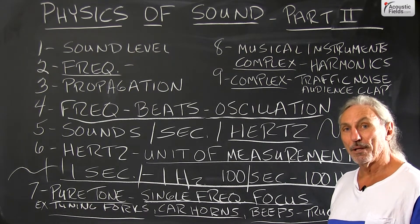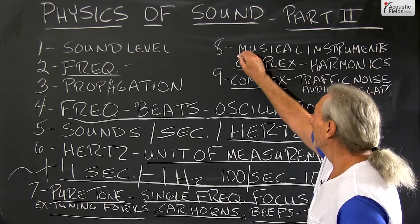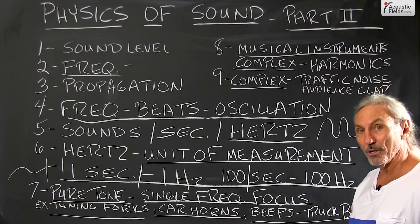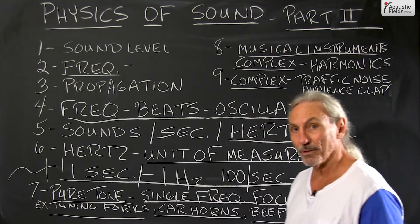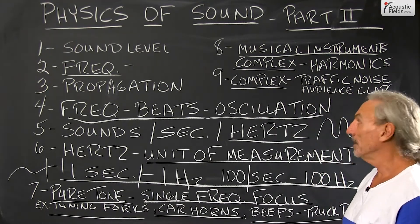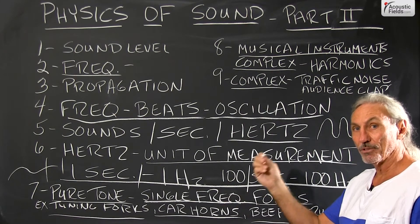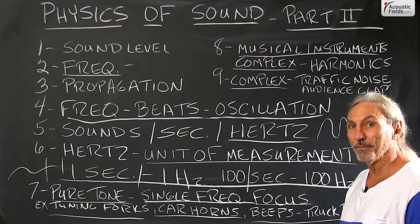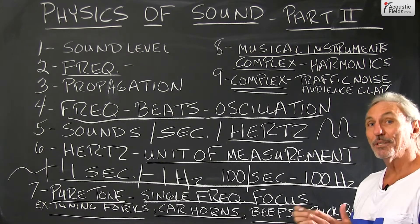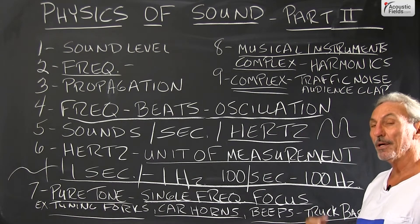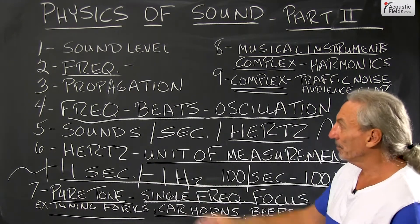Most of the tones we hear in our daily lives are not pure — they're complex. Musical instruments are a good example of complex tones: lots of fundamentals, lots of harmonics. A pure tone has no harmonics, just pure single frequencies. Complex tones get into the harmonics, the structure, the tail of the fundamental. Examples of complex sounds include traffic noise and audience clapping — they have fundamentals and harmonics. Pure tones do not.